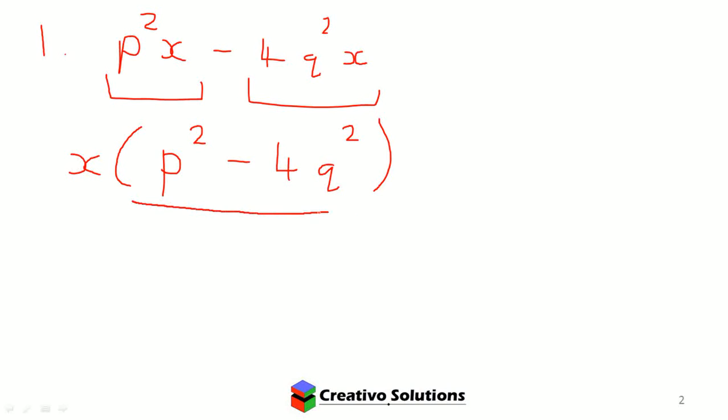Now what am I going to do? Well, I'm going to look at this. I can see we've got two squares, and four is a squared number—two squared would be four. And there's a minus there, so that would be a difference of two squares. So I'm going to factorize that. I'm then going to have X brackets P minus 2Q and P plus 2Q.